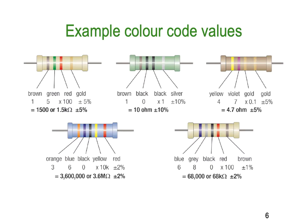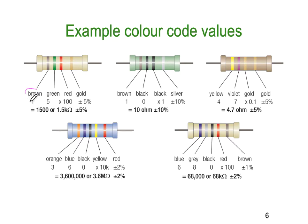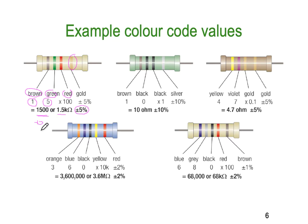Here are some examples of the colour codes. We have brown, green, and red — that's 1 for brown, 5 for green, giving us 15, multiplied by 100. So we get 1,500, or 1,500 ohms, which we would express as 1.5k ohms. The gold band on the end is our tolerance, telling us we're within 5%. So the nominal value is 1,500, but the actual value could be up or down by 5%.